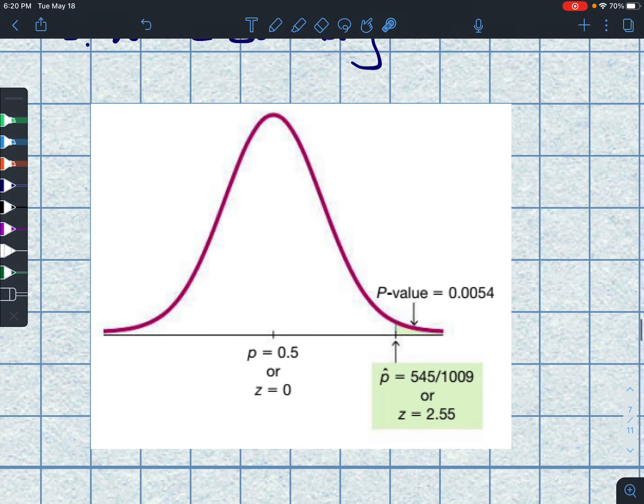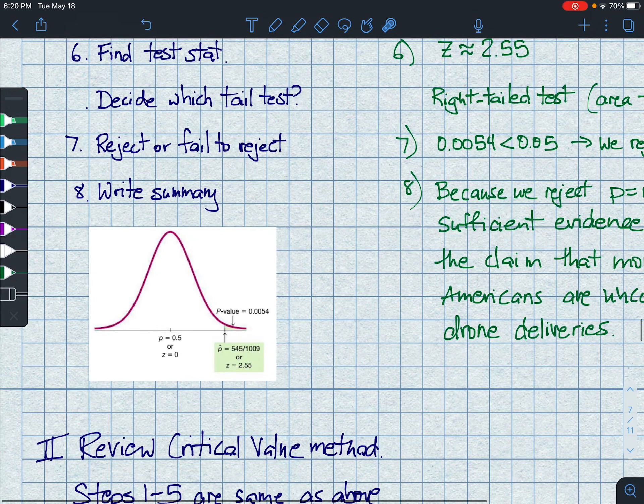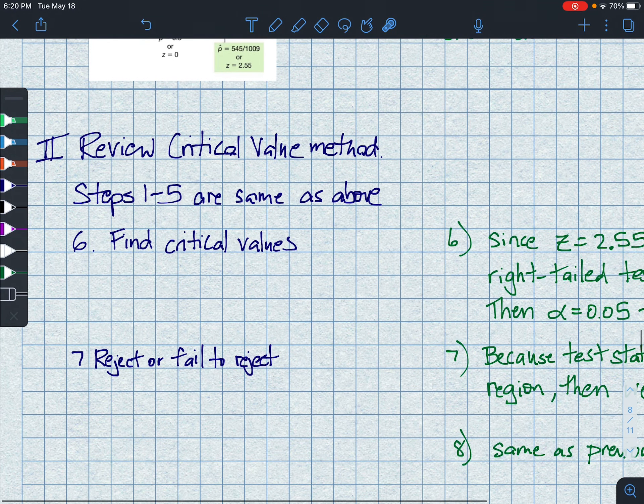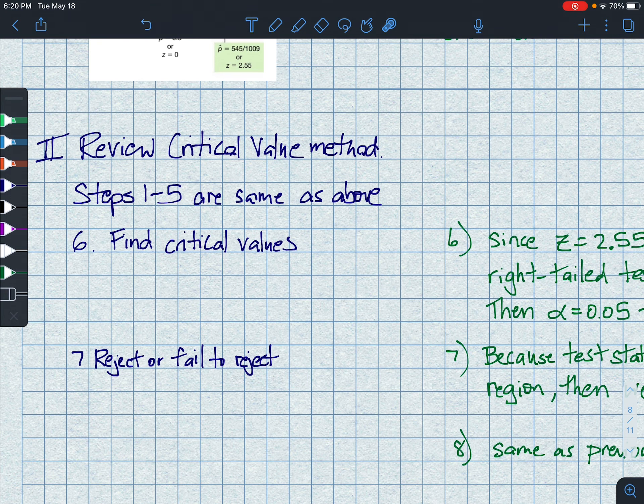All right. And again, here is a picture of that piece, our proportion, our critical stat value. And then where we are, 0.054, way off to the right. Clearly out of bounds.